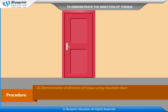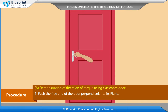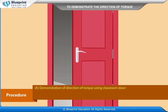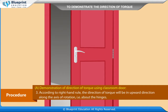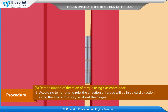Procedure — Demonstration of direction of torque using a classroom door: Push the free end of the door perpendicular to its plane. The sense of direction of push will be anti-clockwise with respect to the hinge. According to the right-hand rule, the direction of torque will be in the upward direction along the axis of rotation, that is, about the hinges.